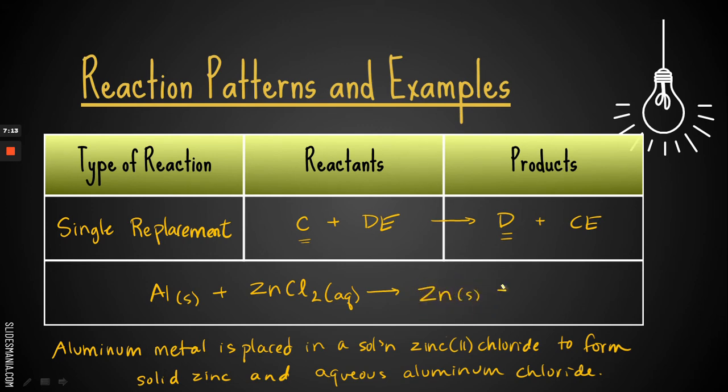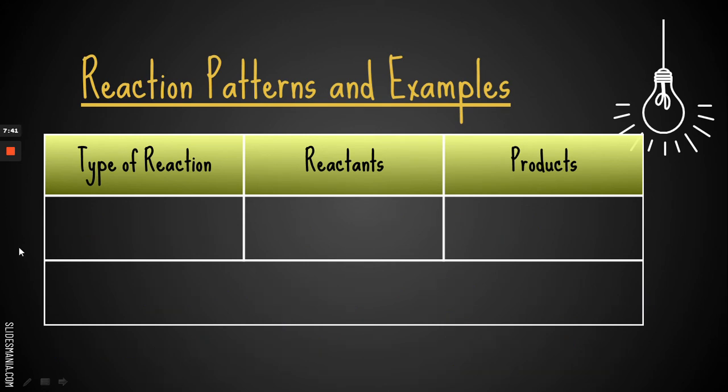Solid zinc, so Zn, and aqueous aluminum chloride, Al, which is plus three, and Cl, which is minus one, and aqueous. So here's our pattern. See how this one element and a compound produce one element and a compound. So the zinc and the chlorine have switched places. That is called single replacement or single displacement.